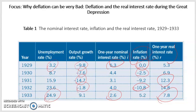Low activity led to even more deflation, and higher real interest rates led to lower spending, creating a vicious cycle. Starting in 1934, however, deflation gave way to inflation, leading to a large decrease in the real interest rate, and the economy began to recover, as shown in the table.